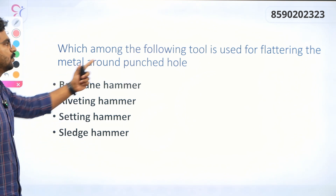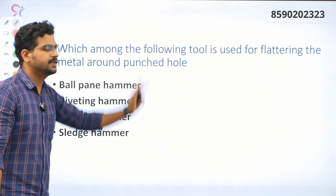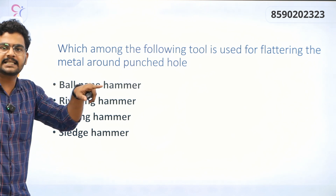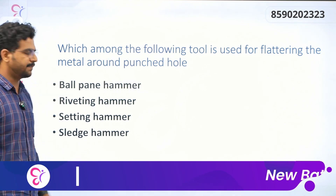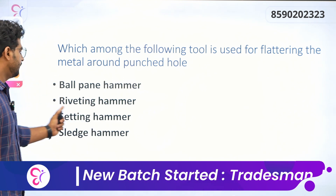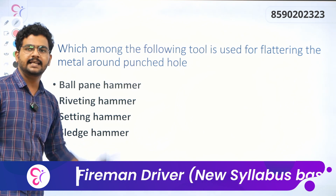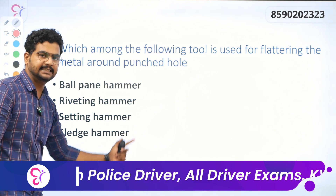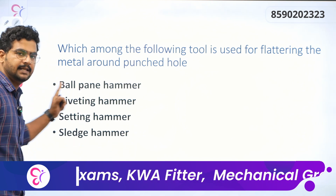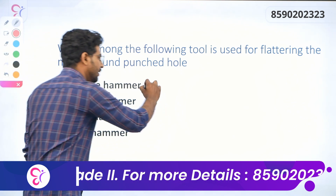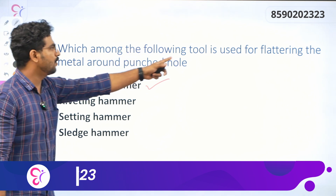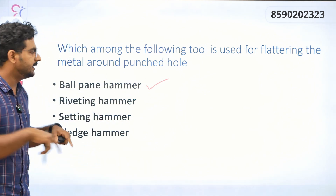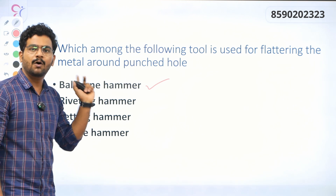Which of the following tools is used for flattening the metal around a punched hole? The options include ball pin hammer, riveting hammer, setting hammer, and sledge hammer. The correct answer is ball pin hammer — the tool used for flattening the metal around a punched hole.